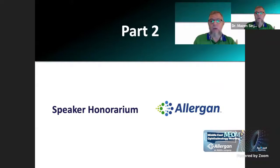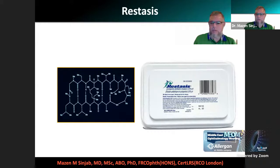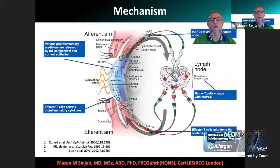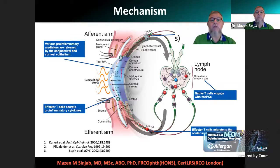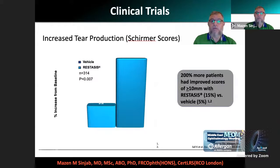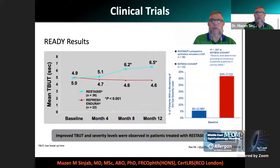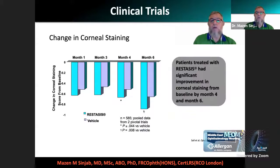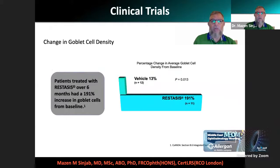This is part two, which is related to Allergan, including Restasis. Restasis is an anti-inflammatory product that cuts the cascade of inflammation. It also increases tear film production per studies, improves tear film breakup time over time, reduces corneal staining - meaning more viable epithelium - and increases goblet cell density.